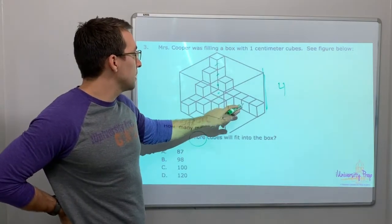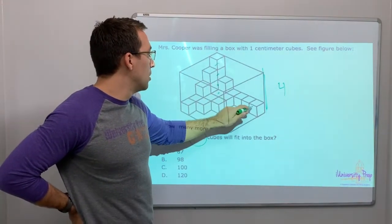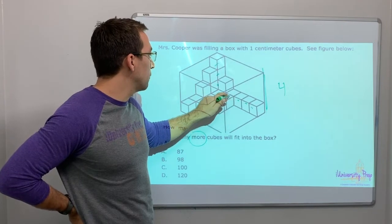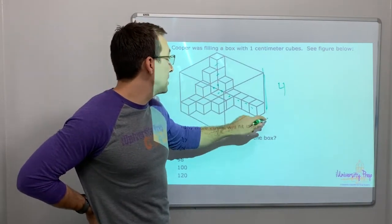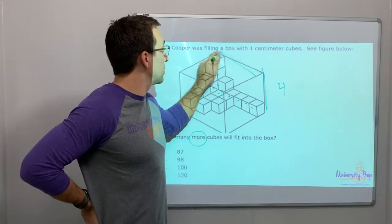And how many is it deep or long? One, two, three, four, five, six. It's six this way.